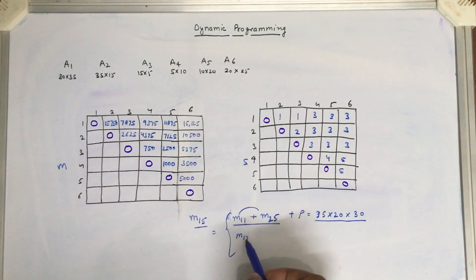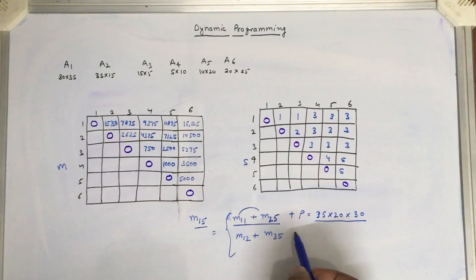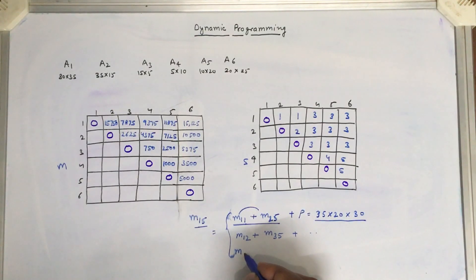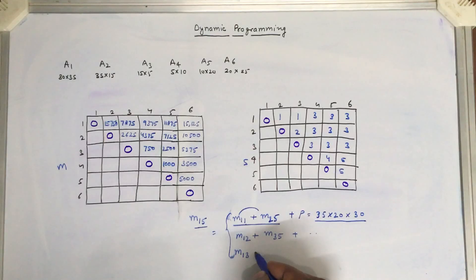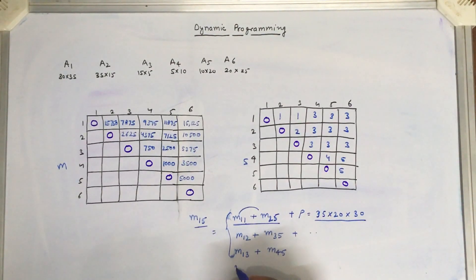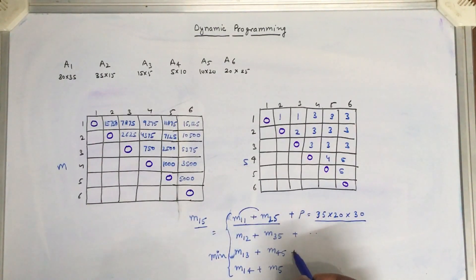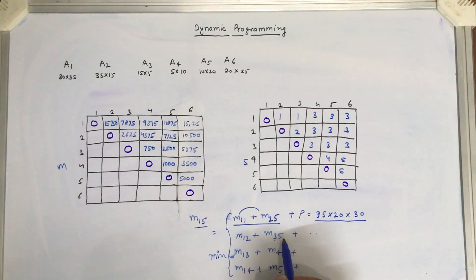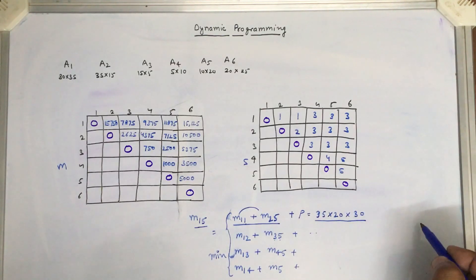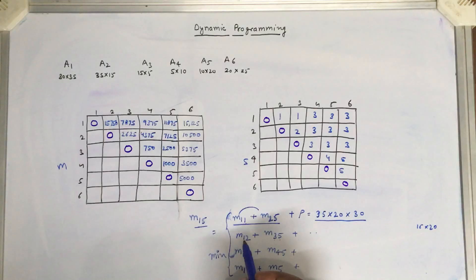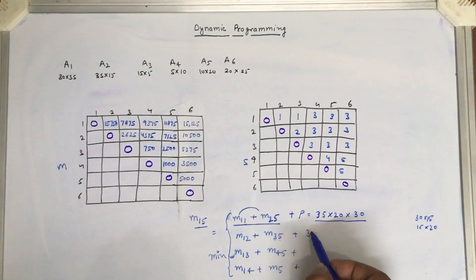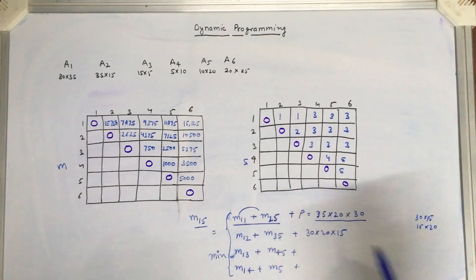The number of multiplications required from m12 plus m35, plus the number of multiplications required, then m13 plus m45, m14 plus m5 — these are the four possible combinations and we need to find the minimum. In the first case, we multiply matrices 3 to 5, which gives order 15 by 20, and matrices 1 to 2 give order 30 by 15. So the total number of multiplications required is 30 × 20 × 15.